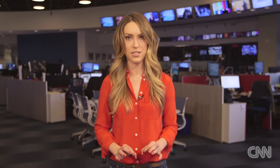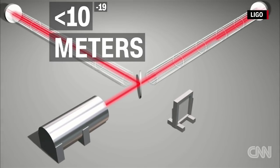If gravitational waves pass through the detector, the distance the laser beams travel changes by a very small amount. I'm talking about 10 to the negative 19 meters or less.